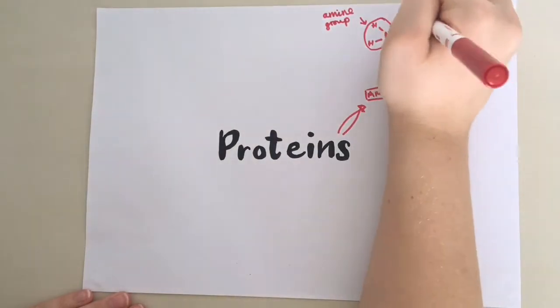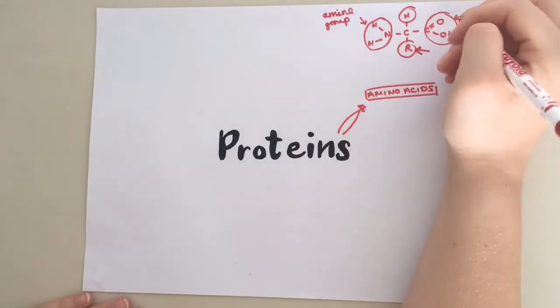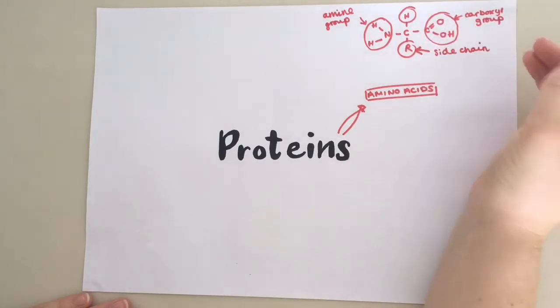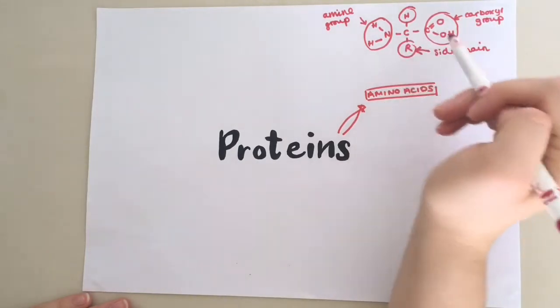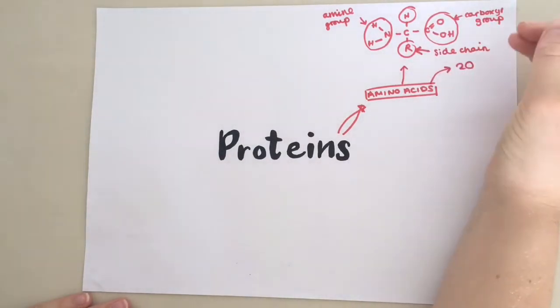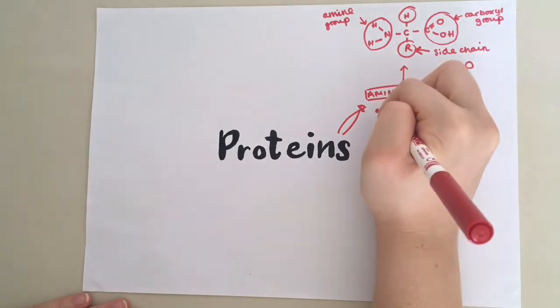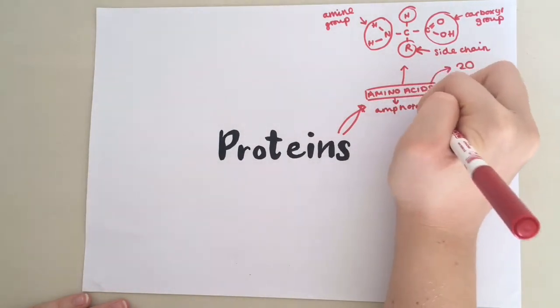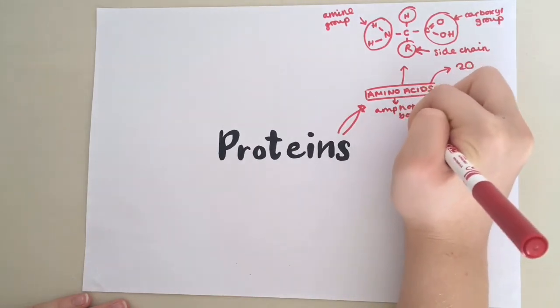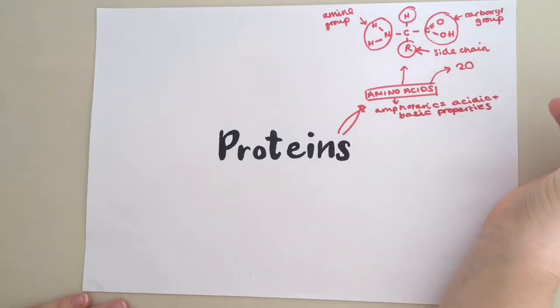They also have this hydrogen here bonded to the carbon and then they will have this R group, which is basically a variable side chain. This is the thing that makes all the amino acids different. There are 20 naturally occurring amino acids and amino acids are amphoteric, which means they have acidic and basic properties, so can act as buffers in solution.